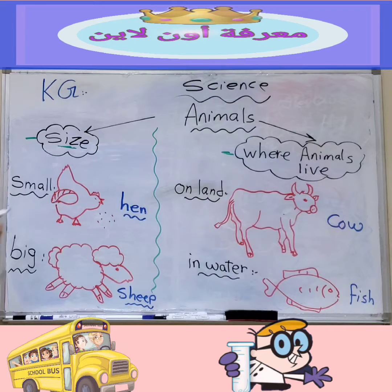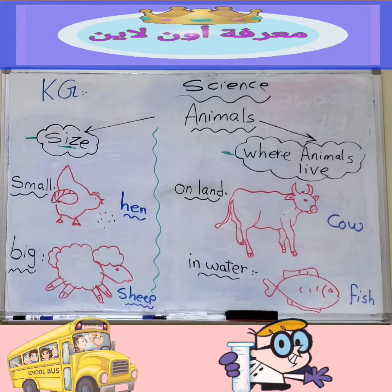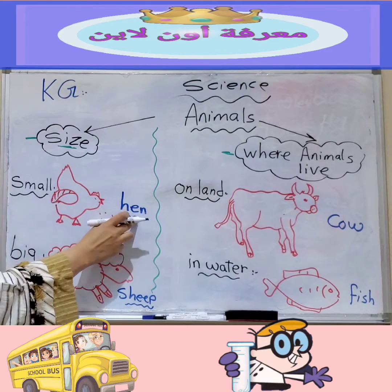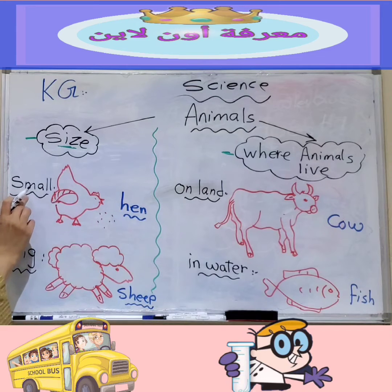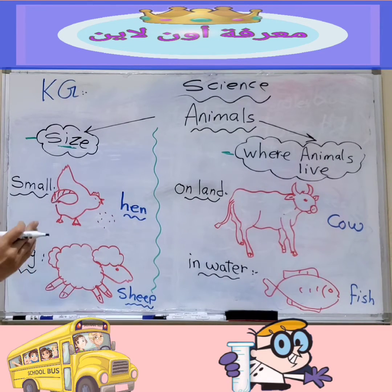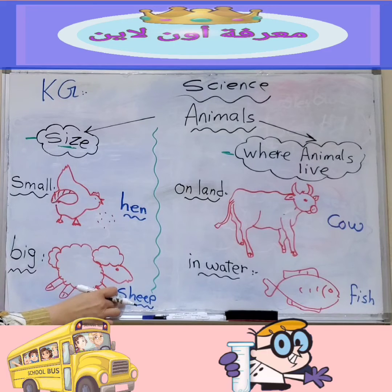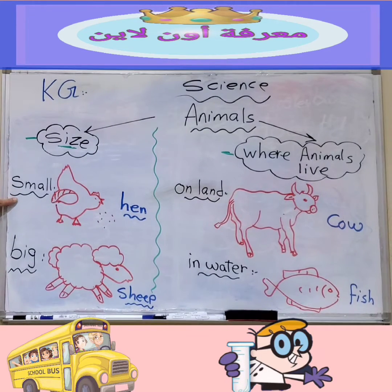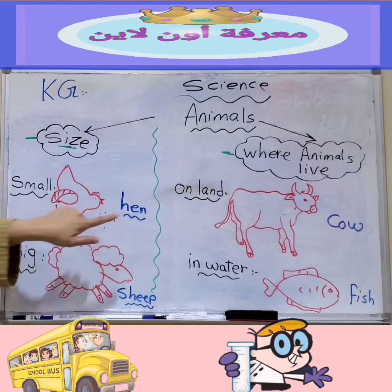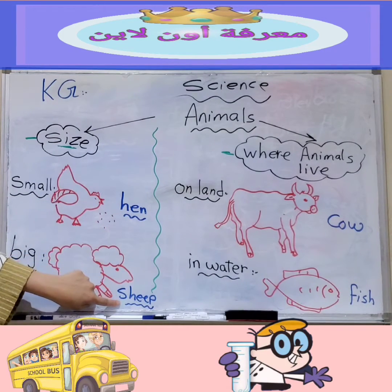Some animals are small, like the hen. Hen is a small animal. Some animals are big, like the sheep. Sheep is a big animal. So, the size of animals is either small, like the hen, or big, like the sheep.